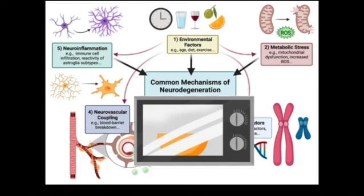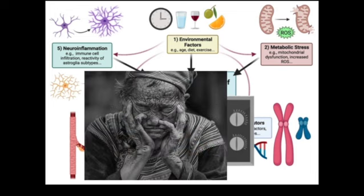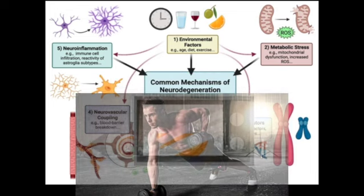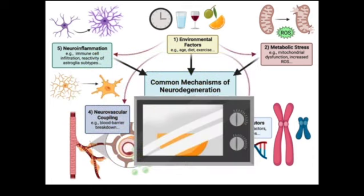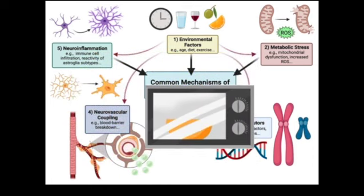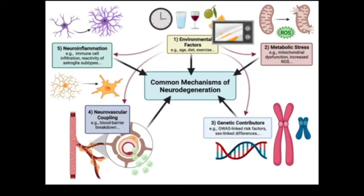Recent neurodegeneration concerns categorize environmental factors such as age, exercise, diet, and lifestyle. Some researchers suggest that microwave ovens be added as an environmental factor.